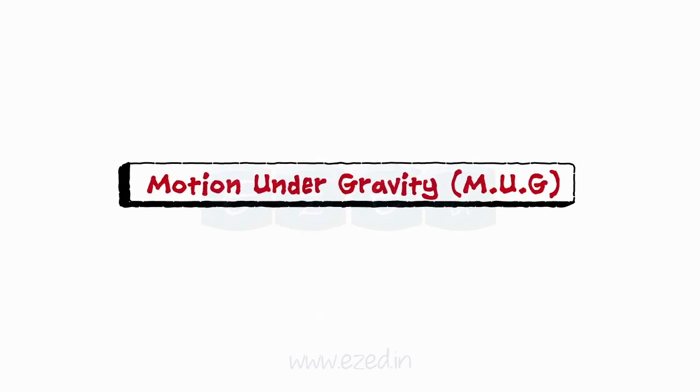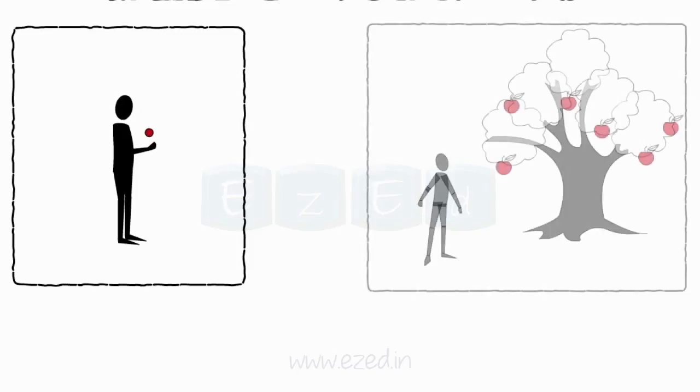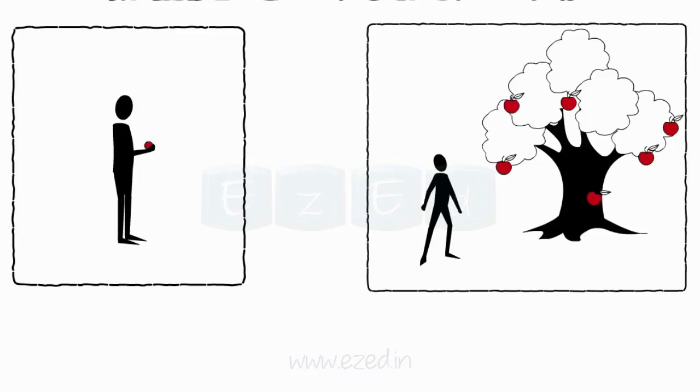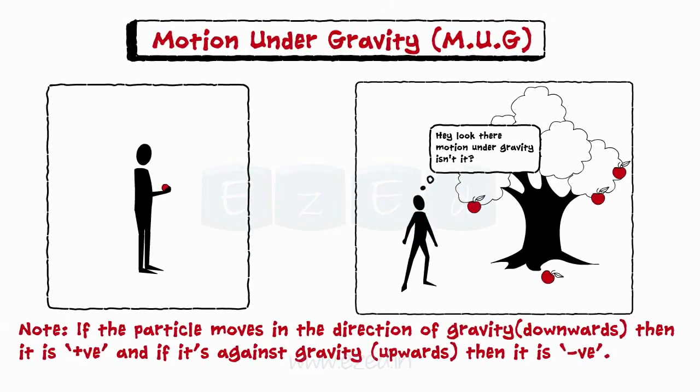Motion under gravity is a special case of uniform acceleration motion. Any object thrown in the air has to come down due to the effect of gravity — like a ball thrown upward or an apple falling from a tree. Consider the given notes while solving problems on motion under gravity.